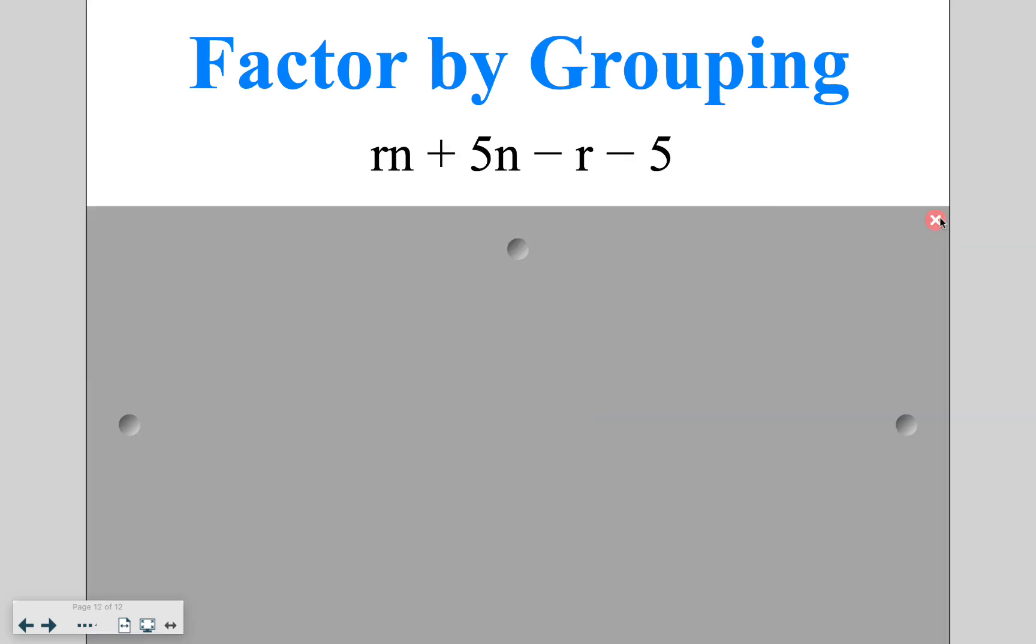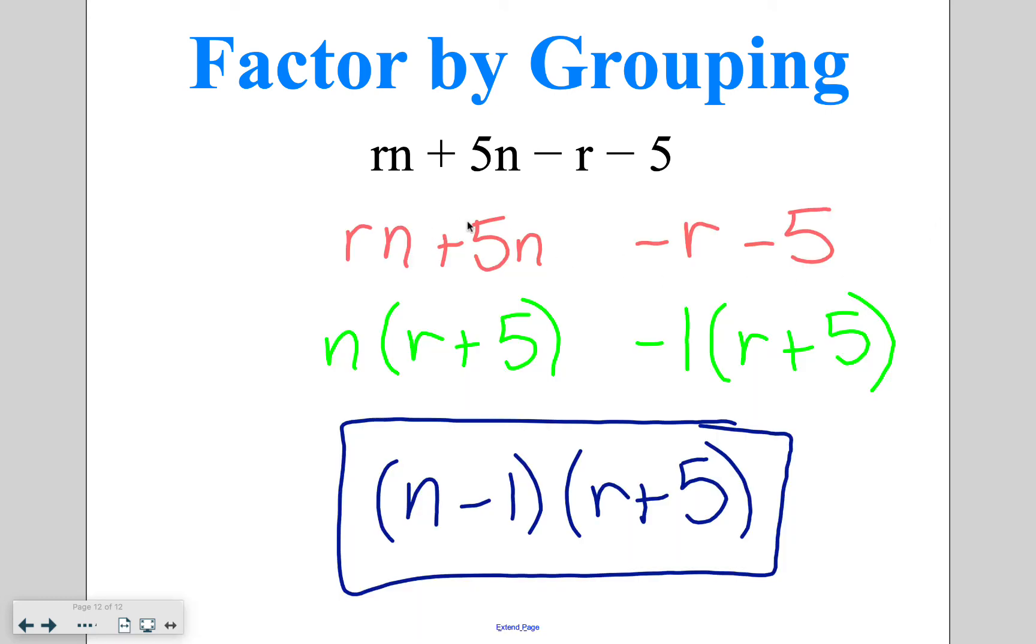Go ahead and try this one on your own. We split it in half, and we're first just looking at our rn plus 5n. Taking out that greatest common factor of n, we have r plus 5. Then I have negative r minus 5, which almost matches, but we're going to pull that negative 1 out of both of them, giving us the r plus 5, giving us a final answer of n minus 1, r plus 5.